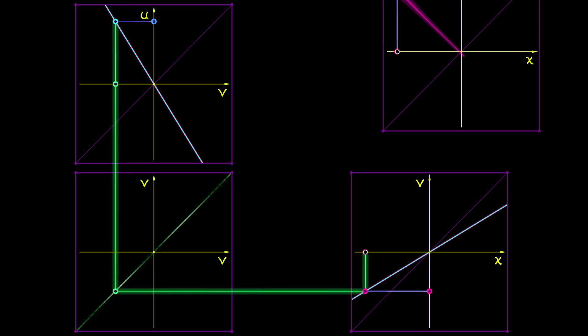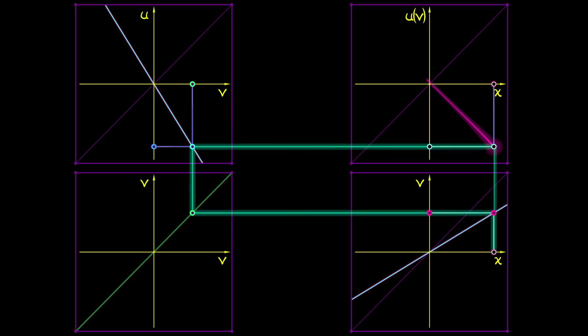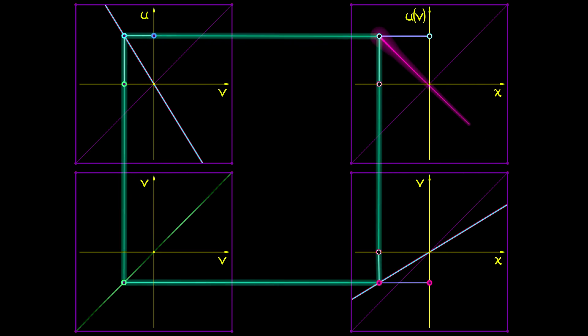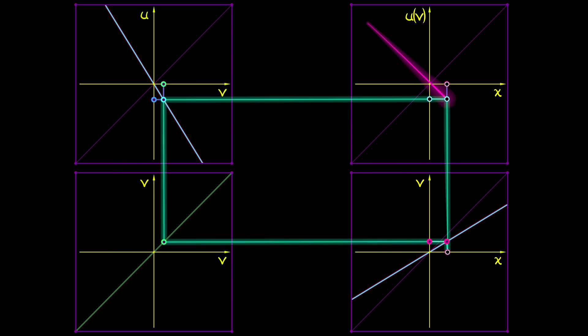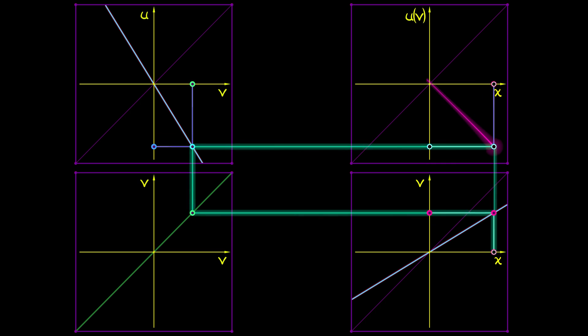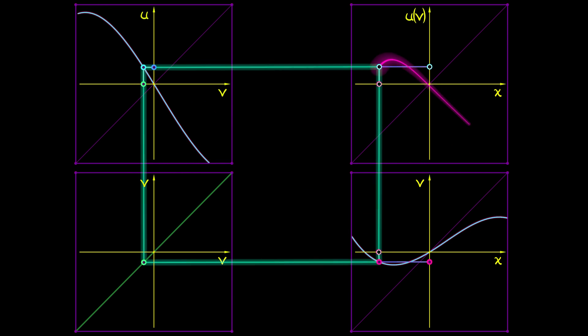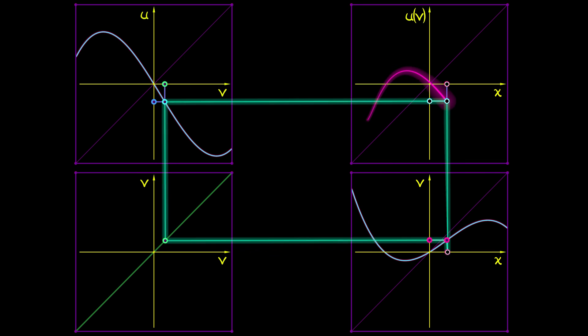Then the composition of these two linear functions will again be a linear function, u composed with v. The coefficient of this composition is going to be the product of the coefficients of u and v. That's the linear version of the chain rule. The cool thing is it works with nonlinear functions as well when you linearize by taking the derivative.